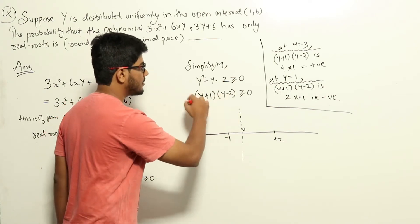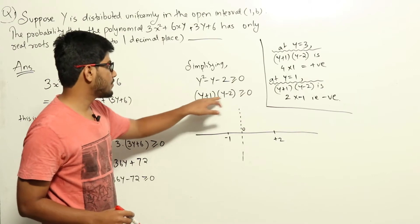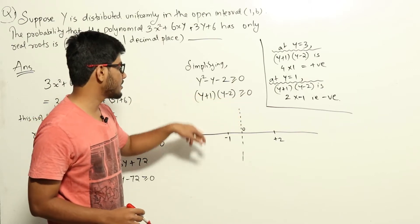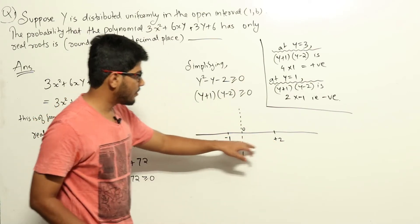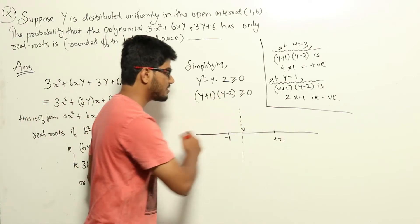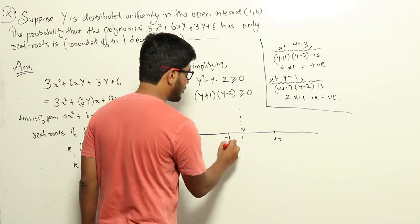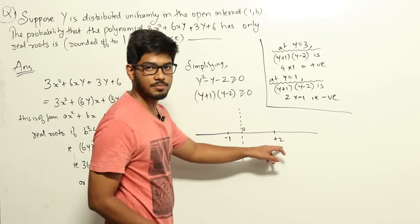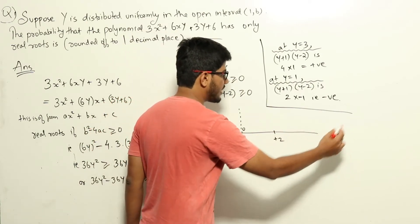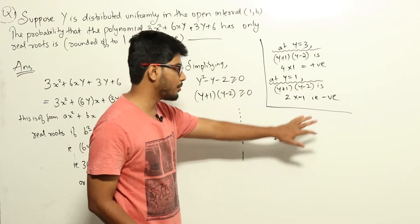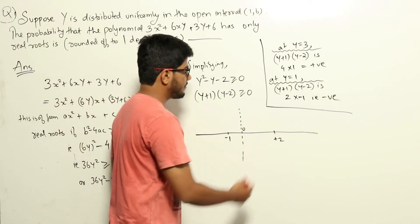Mapping the function on the number line: at y = −1 and y = 2, the function equals zero. Between these two points the function is either positive or negative — substituting y = 3 gives (4)(1) = 4, which is positive, so for y > 2 the function is positive. Substituting y = 1 gives (2)(−1) = −2, which is negative, so between −1 and 2 the function is negative.